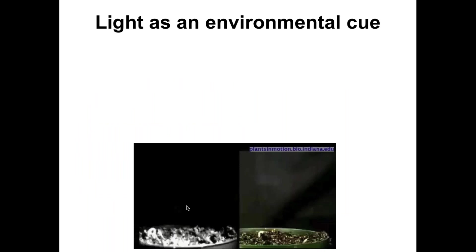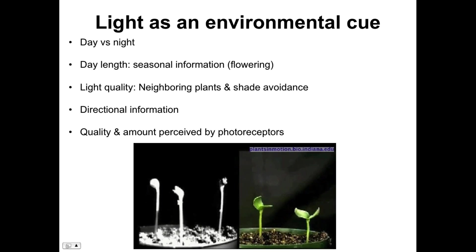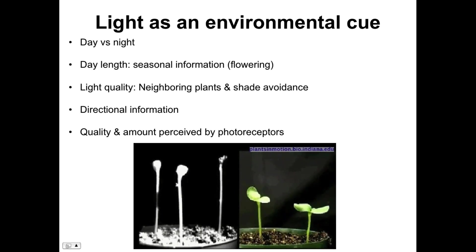Light is an environmental cue, and plants don't just sense whether light exists or not — they're very sophisticated in their ability to respond to light. They can tell the difference between night and day, sense seasonal information by measuring day length, detect light quality (which tells them whether neighboring plants are nearby to avoid shade), and tell the direction of light. The quality and amount of light is perceived by photoreceptors.